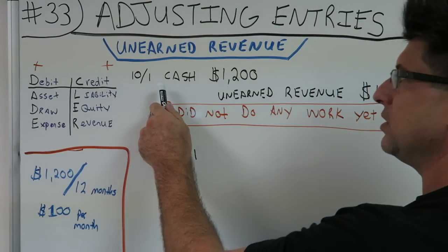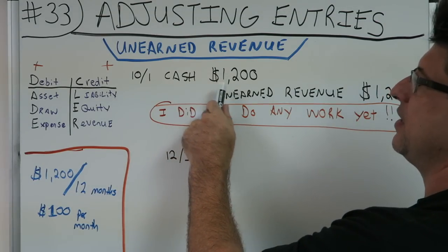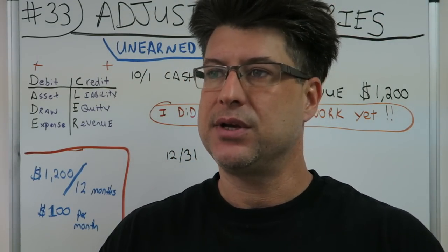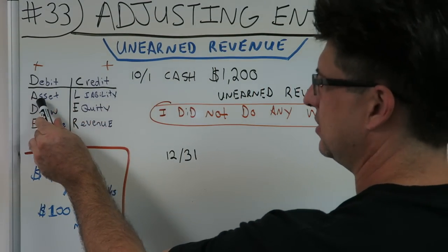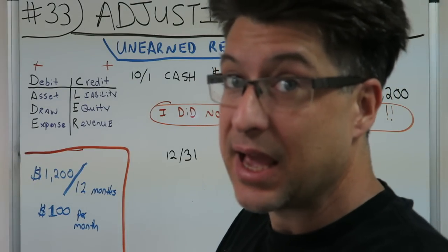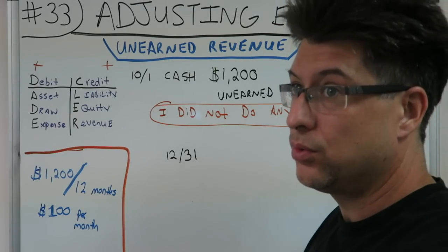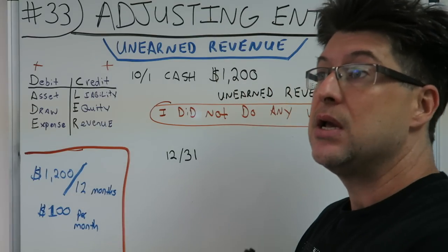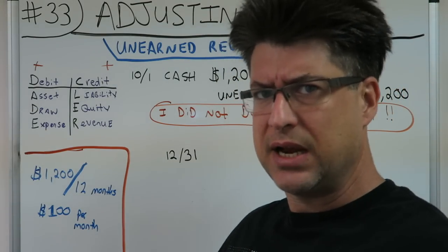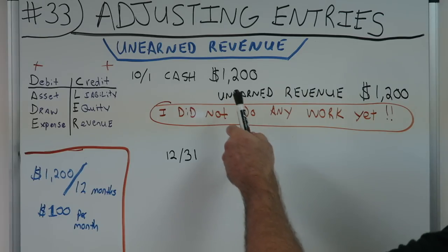On October 1st, a new client pays for the whole year right now — gives you $1,200 cash. That's going to be your debit. Cash is an asset, normal balance going up, so that's a debit: Cash $1,200. What did you get the cash for? To mow lawns. But you haven't mowed the lawn yet — he just fronted you all the money. So you didn't earn it yet — unearned revenue is going to be your credit.